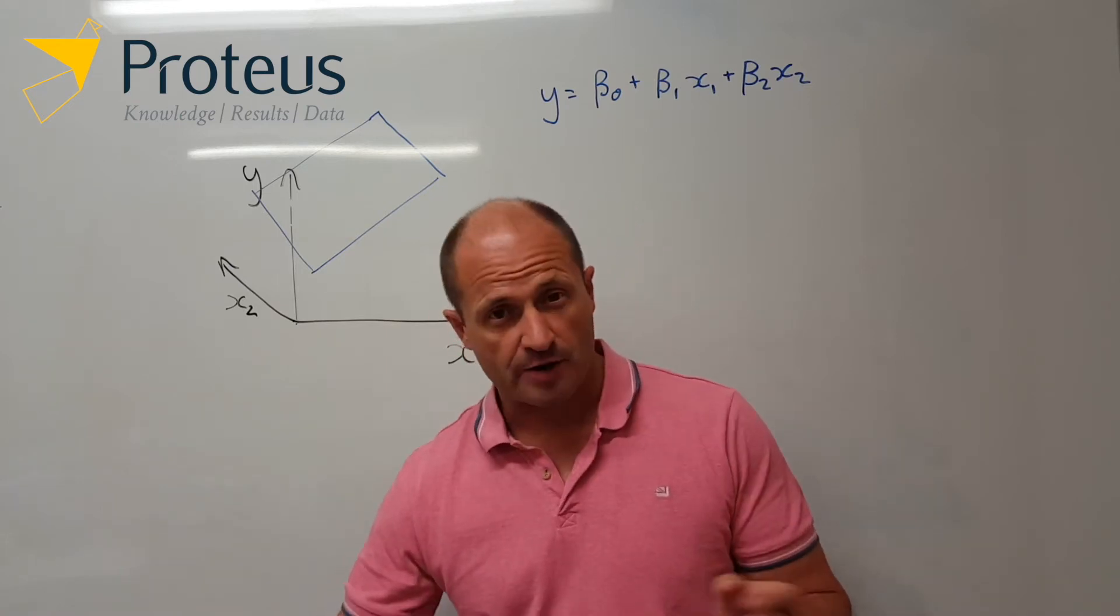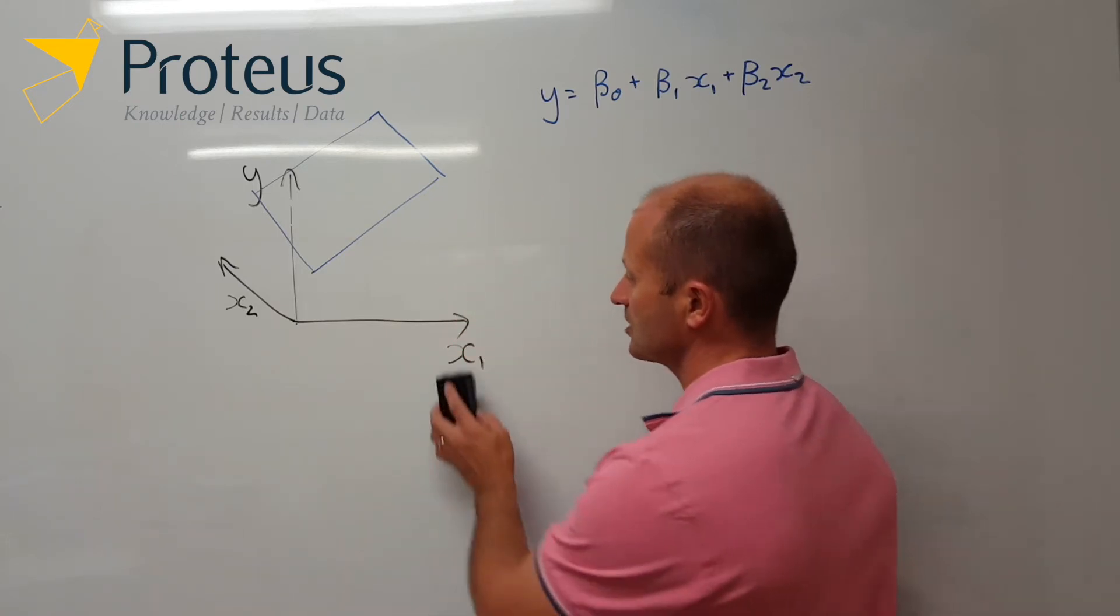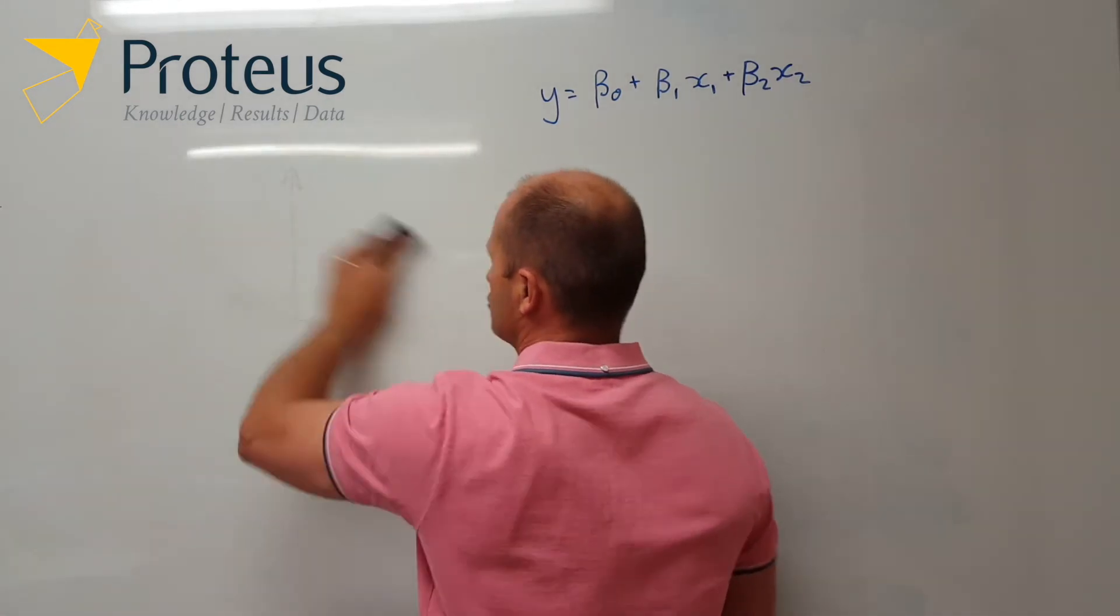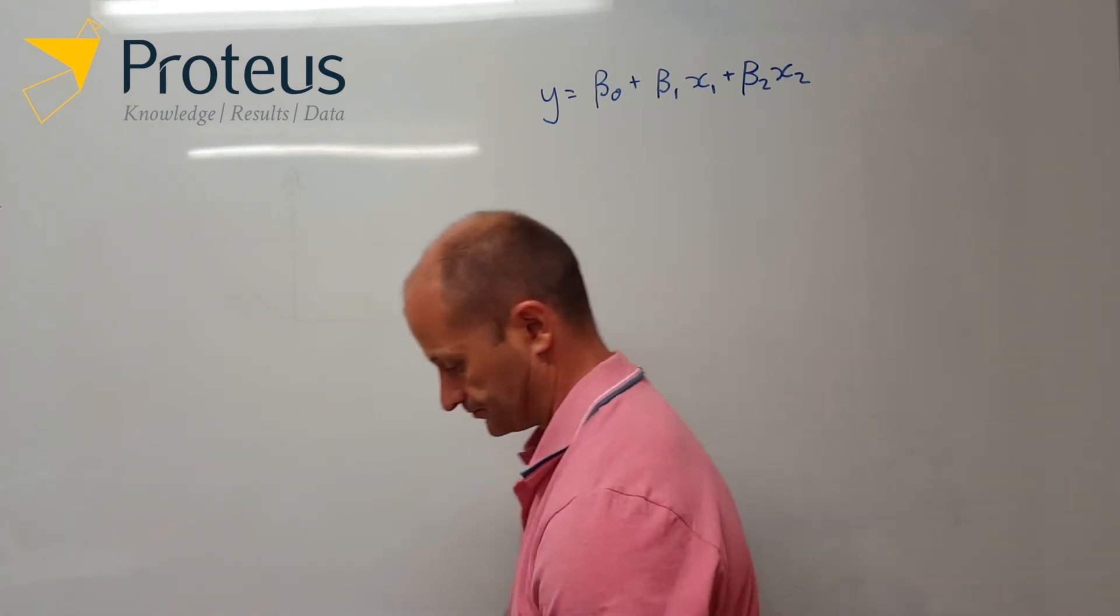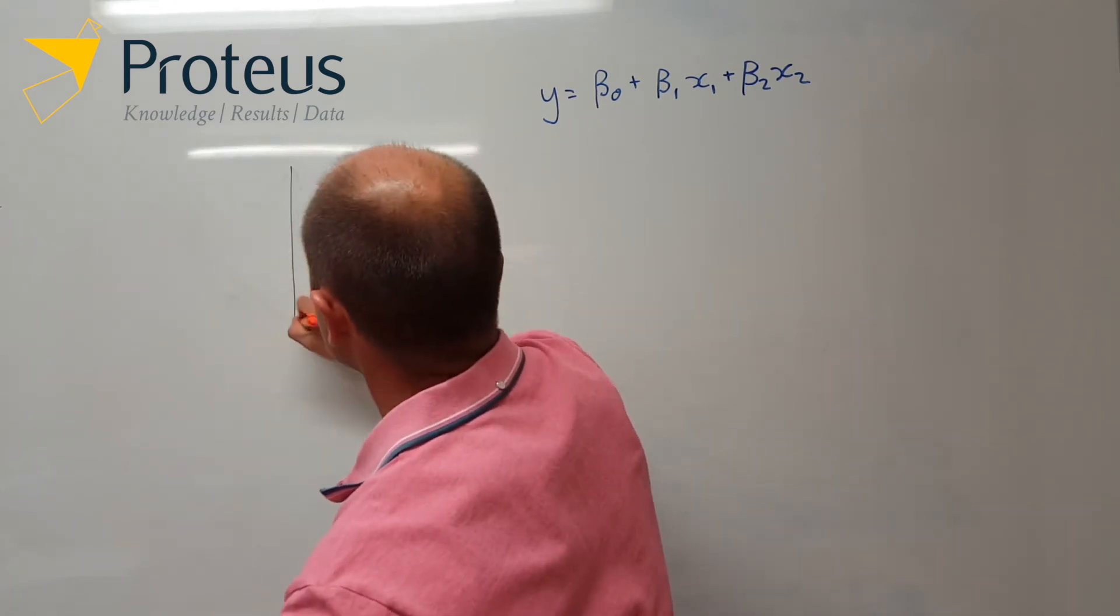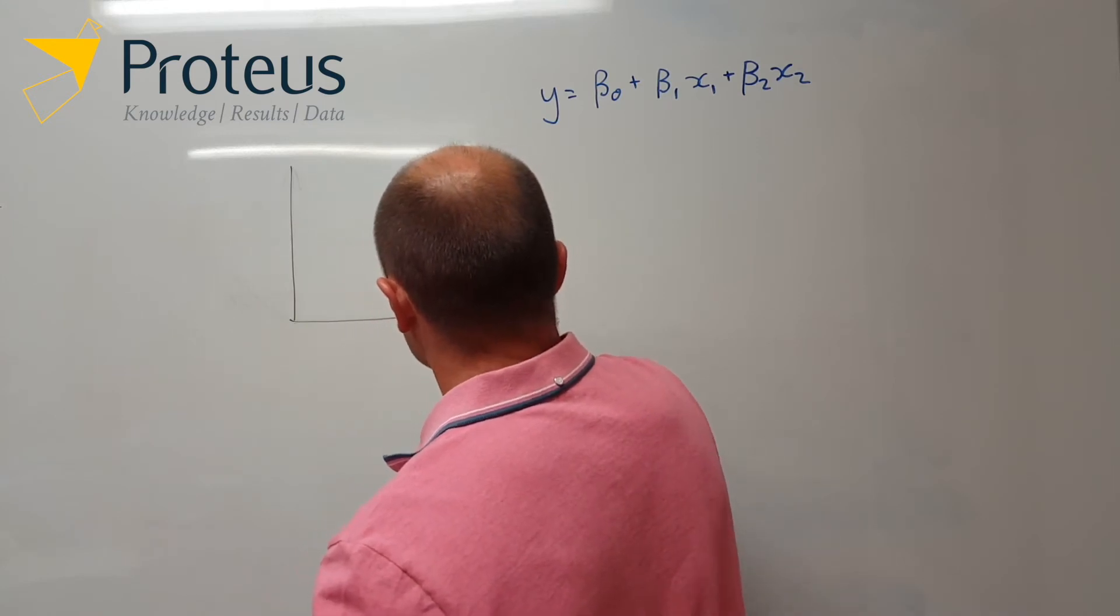Now, one way of describing that mathematically, is if we just have a situation with just a single variable, for a start. So we have our, again, x1, and we have our response, whatever that happens to be.